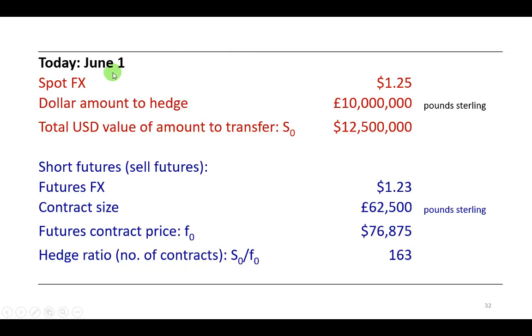So let's say that today June 1st, you have 10 million pounds in a British bank and you're an American. Let's say right now the exchange rate between the US dollar and the pound sterling is $1.25 per sterling. So what this means is that right now your money in the British bank is worth $12.5 million.